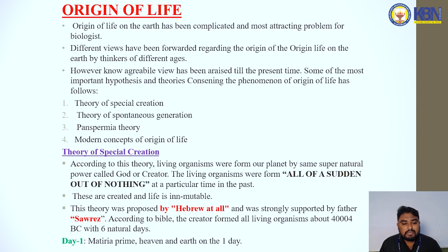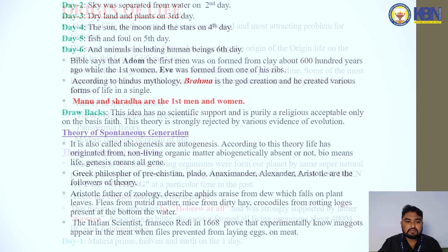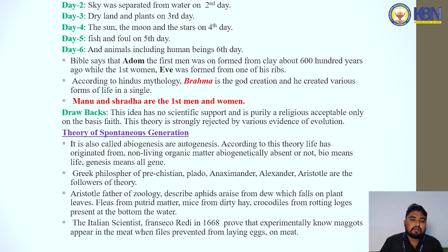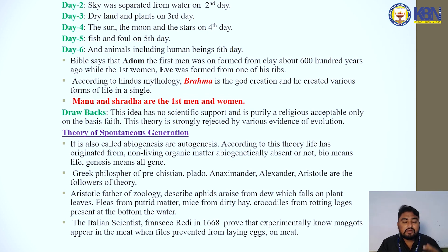On the first day, matter, heaven, and earth were created. On the second day, the sky was separated from the water. On the third day, land and plants appeared. On the fourth day, the sun, moon, and stars. On the fifth day, fish and birds. On the sixth day, animals including human beings.